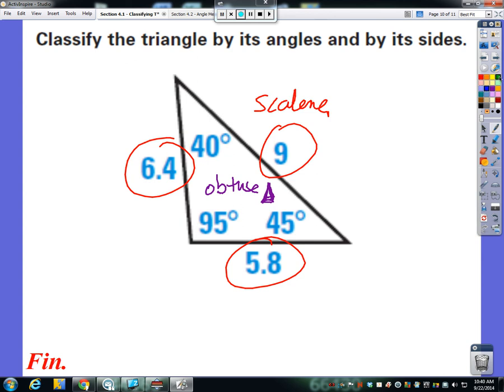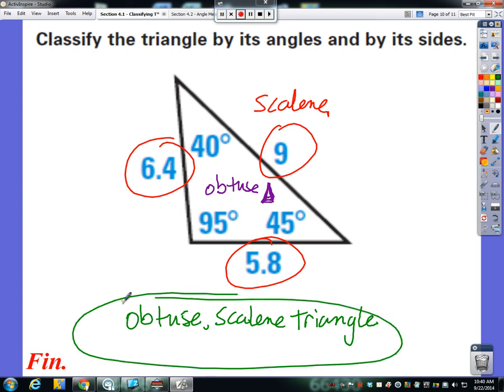Now if I wanted to combine everything together, I could call this an obtuse, scalene triangle. An obtuse scalene triangle. I could have said scalene obtuse triangle, it doesn't really matter the order that you put these two in. As long as you identify both of them, as long as they're asking for both angles and sides.